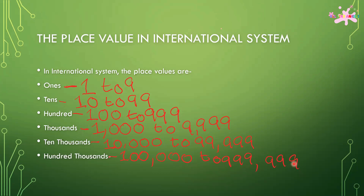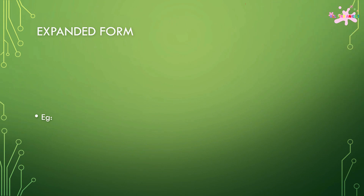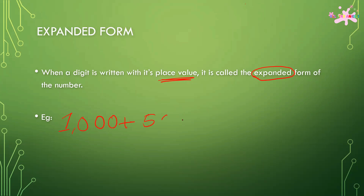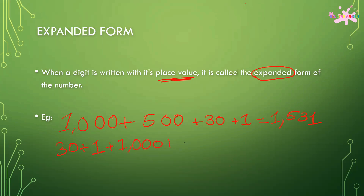Expanded form. When a digit is written with its place value, it is known as the expanded form of the number. For example, 1,000 + 500 + 30 + 1 = 1,531. It can also be written in any other order, like 30 + 1 + 1,000 + 500, and it will still be equal to 1,531.